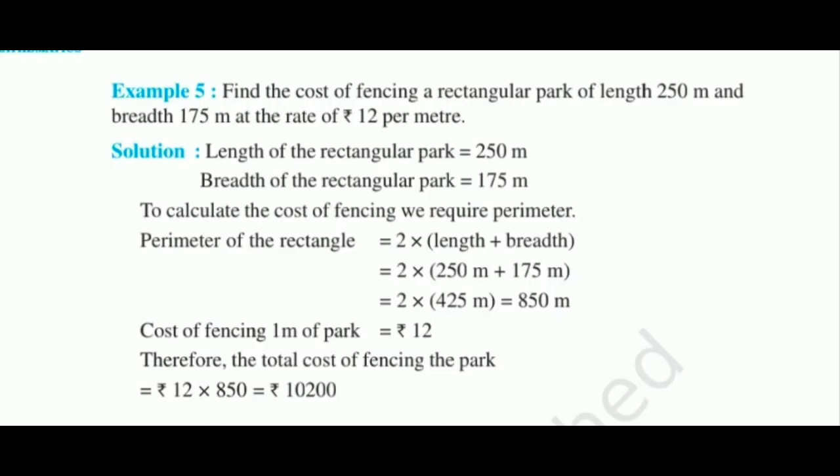Example 3: Find the cost of fencing a rectangular park of length 250 meters and breadth 175 meters at the rate of 12 rupees per meter. Solution: Perimeter equals 2 into (250 plus 175), which is 2 into 425, which equals 850 meters. Cost of fencing 1 meter is 12 rupees. Therefore, the total cost of fencing is 12 into 850, which equals rupees 10,200.